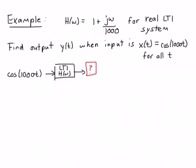So let's see an example. So in this example, we've been given the frequency response. We're told that the frequency response of this system is 1 + jω/1000, and it's for a real LTI system. And we want to find the output y(t) when the input is x(t) = cos(1000t) for all time. Again, it's important that these signals last over all time for this particular calculation.